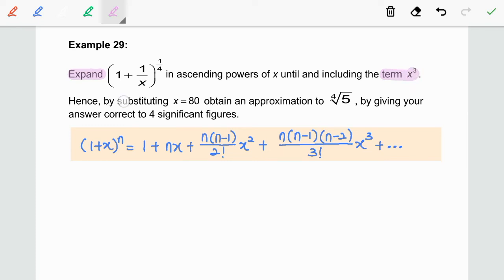Hence, by substituting x equal to 80, obtain an approximation to fourth root of 5 by giving your answer correct to 4 significant figures.